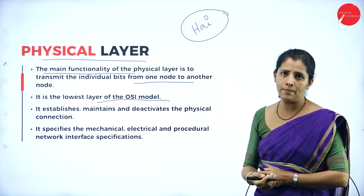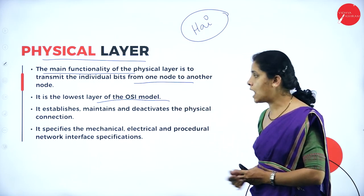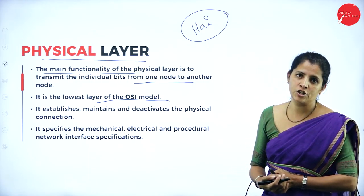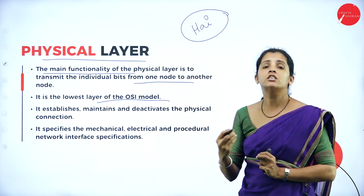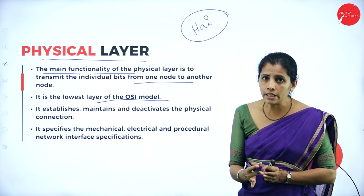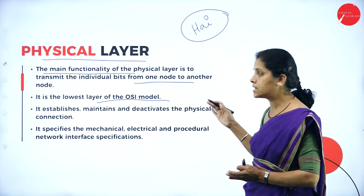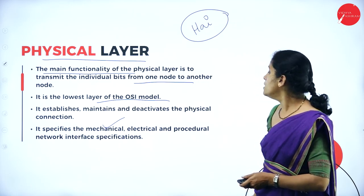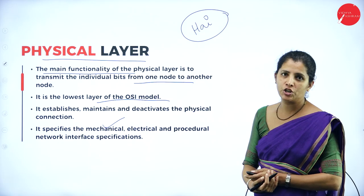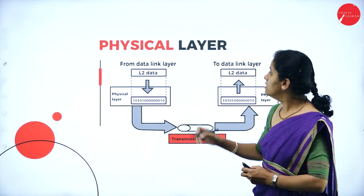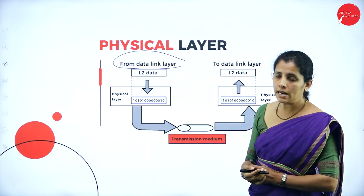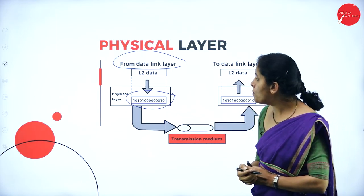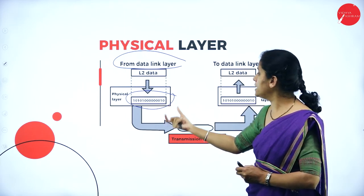The physical layer is the lowest layer of the OSI model. It establishes, maintains, and deactivates the physical connection. It also specifies the mechanical, electrical, and procedural network interface specifications. Data from the data link layer above is passed down and transferred in the form of binary digits — that is, bits.